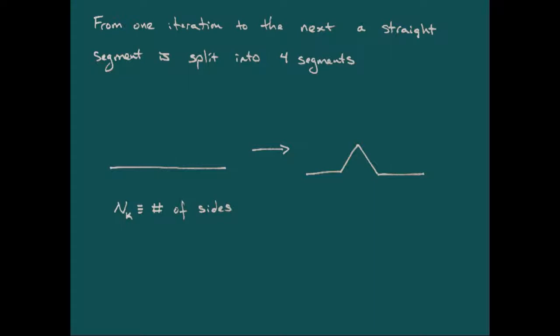So let's look at how we actually get the length of this snowflake. As we go from one iteration to the next, each straight line segment that we do is actually going to be split into four segments. Now if we let n sub k equal the number of segments at the kth iteration, then we get this recurrence relation where n sub k is going to be equal to four times n sub k minus one. Now our zeroth iteration, we're starting with an equilateral triangle with just three sides. And so our closed form for a number of sides just looks like n sub k is equal to three times four to the k.